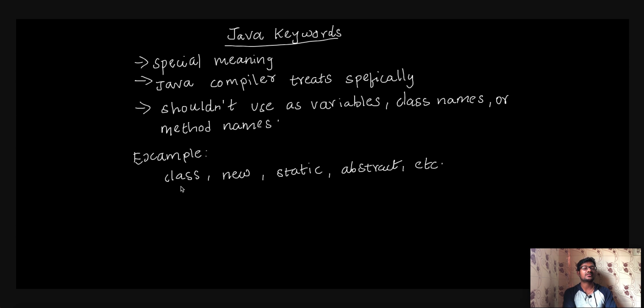For example, if we want to use a class, if we want to use the new keyword to create an object, then we can use the new keyword. So there is a purpose and a specific meaning. That means we can work with a keyword for a specific purpose.